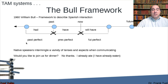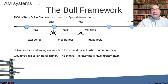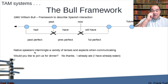Just as in English there is past perfect, present perfect, future perfect, present, and future — there are these eight different time components. Native speakers intermingle a variety of these aspects when they're communicating, just like the previous example. For instance: "Would you like to join us for dinner?" — and the response "No thanks, I already ate" or "No thanks, I have already eaten."